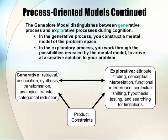Process-oriented models continued. The Juniplore model distinguishes between generative processes and explorative processes during cognition. In the generative process, you construct a mental model of the problem space. In the exploratory process, you work through the possibilities revealed by the mental model to arrive at a creative solution to your problem.